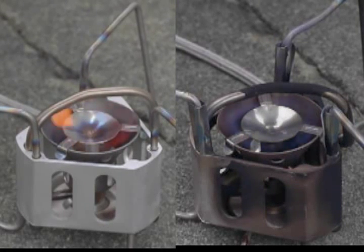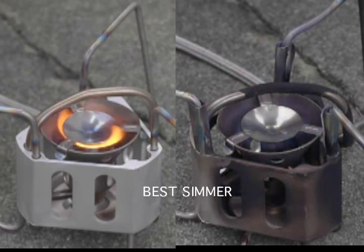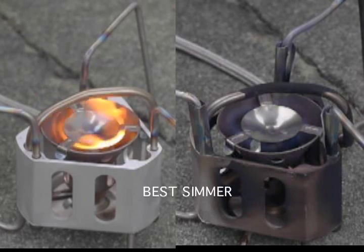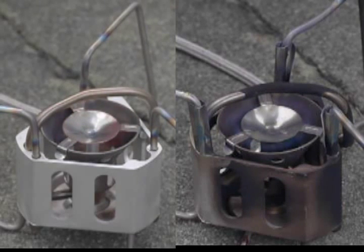But both of these are, I think, fairly okay for simmering for this type of stove, which is the flame spreader roar type. As you can see, the one on the left reaches a point where there's some yellow flame that is being produced that does not occur with the 0.28 millimeter jet.